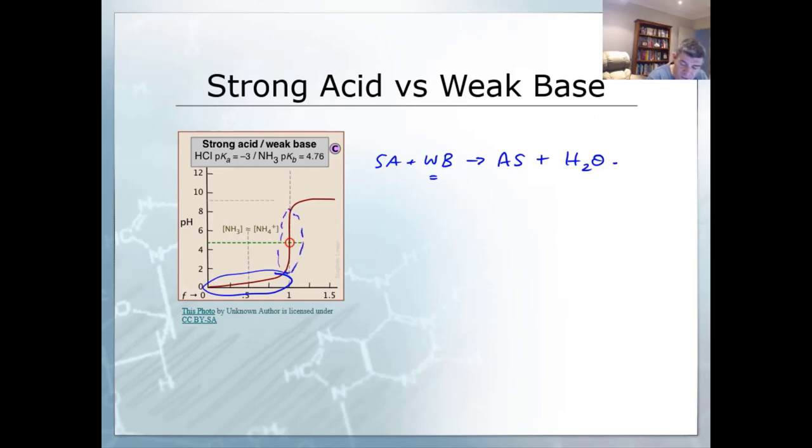But this time the equivalence point is actually at a pH which is below 7, because the salt that we're producing is an acidic salt. There's a lot more reasons why this stuff is happening, and we need to go into it in a little bit more detail, and you will.